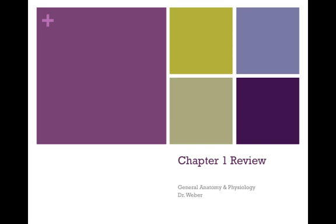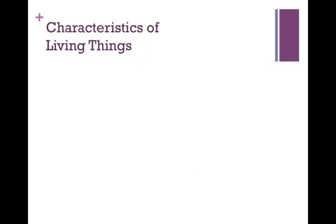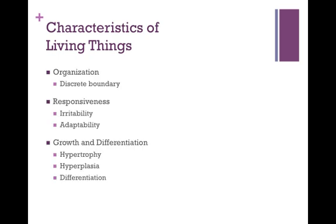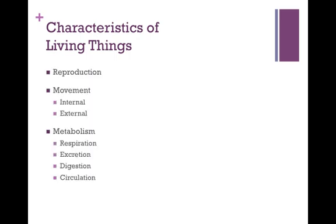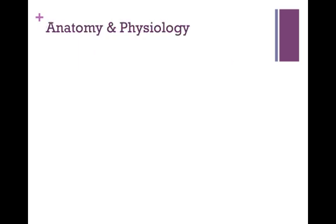This is a quick rundown of everything you need to know for Chapter 1 for the exam. You need to know the characteristics of living things. That includes organization, responsiveness, growth and differentiation, reproduction, movement, and metabolism. Make sure that you can list those and make sure that you can give a definition of those.